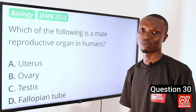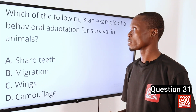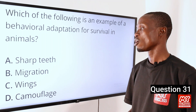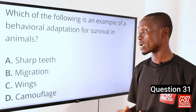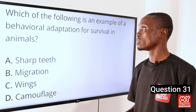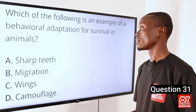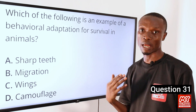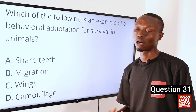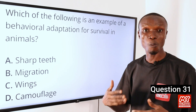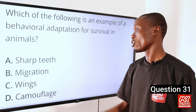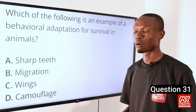Question 31. Which of the following is an example of a behavioral adaptation for survival in animals? A. Sharp teeth. B. Migration. C. Wings. D. Camouflage. The answer is migration. Migration is an example of behavioral adaptation for survival in animals — animals can migrate for many reasons such as looking for better food sources, more favorable climate, or suitable breeding places. So option B is the correct option.